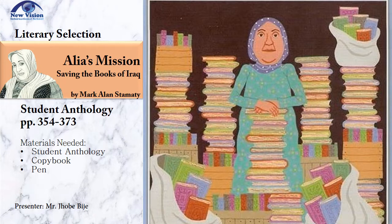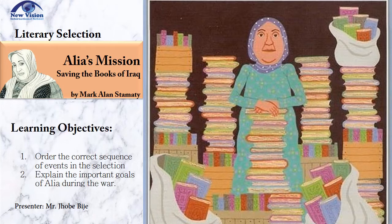I hope that you have your materials ready — your student anthology book, copy book, and your pen — and please turn to page 354 as we start. Our learning objectives are pretty simple. First is to order the correct sequence of events in the selection, and number two is to explain the important goals of Aaliyah during the war.